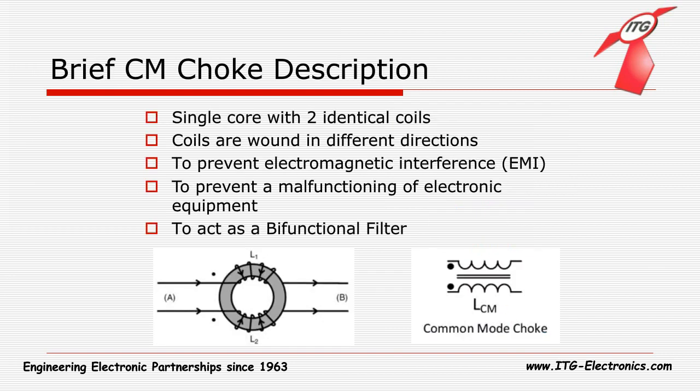The Common Mode Choke, in theory, is made up of a signal core with two identical coils, which are wound around the core in different directions. It is primarily used to prevent electromagnetic interference from the power supply lines. This can help to prevent electronic equipment in an AC circuit from malfunctioning. The Common Mode Choke is, in fact, a bidirectional filter, which means it is used to filter out common mode electromagnetic interference, while not itself sending out electromagnetic interference. The two pictures show us how a Common Mode Choke looks, and its electronic symbol.